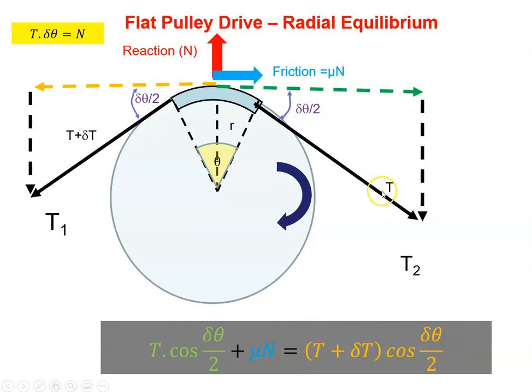So that's that part of it here. And on the green here, so this is T, so it'll be T times cosine Dθ over 2 plus the friction, which is μN. So I'm saying the forces going to the right are equal to the forces going to the left. So we have that equation.